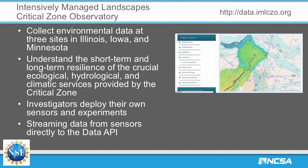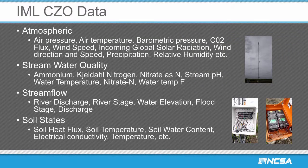Here's a list of some of the data for IML-CZO. On the right you'll see a flux tower providing atmospheric information, set up by university researchers. On the left is a long list — just a subset of the data — including soil, stream flow, and atmospheric data. The challenge here, again, is how you bring all this data together in one place so it's easier for users to find what they're looking for, aggregate it, and eventually do analytics on it.